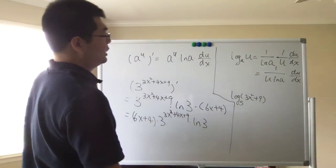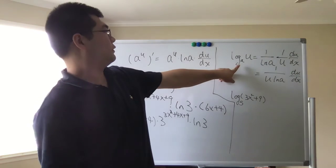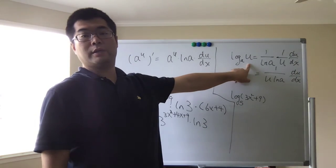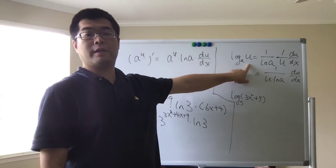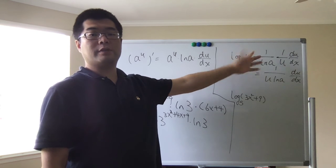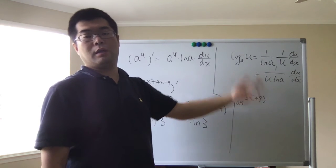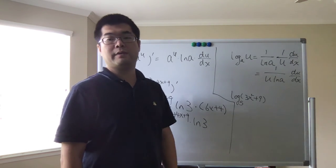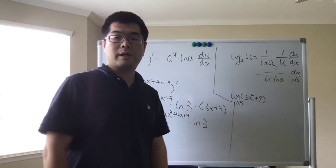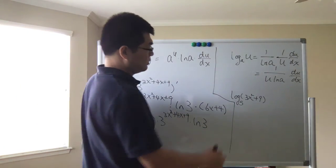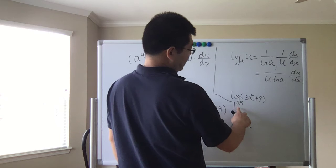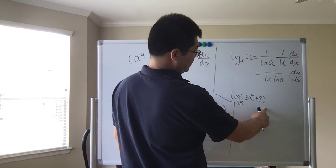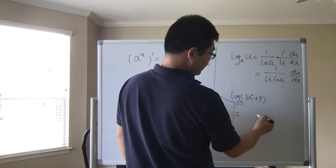For a logarithmic function, if you have log base a of u, where u is a function of x, the derivative is one over ln(a) times one over u times du/dx. For example, consider log base 5 of (3x² + 9).